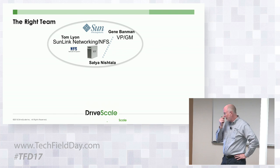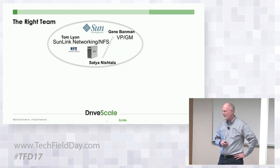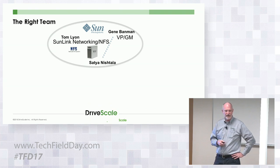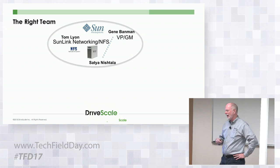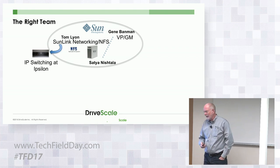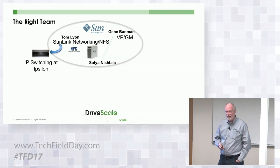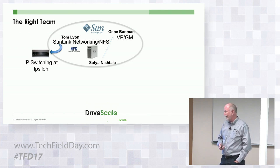I was at Sun for 15 years — president of Sun Japan for five years, then VP GM of the workstation business unit, where Satya was my chief architect — that's how I got connected with this company. Tom left Sun and founded Ypsilon, with an idea of how to do IP switching, which got bought by Nokia. He gave Cisco a lot of headaches for three or four years before deciding to join Cisco.